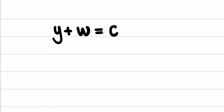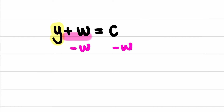If we have y plus w equals c and we want to make y the subject of this formula, in order to make y the subject we need to isolate y — get it alone and positive. We need to get rid of what's stopping y from being alone, which in this case is the positive w. The opposite of adding is subtracting, so I would subtract w from both sides, because it's still an equation and we have to keep it balanced. Therefore y equals c minus w.